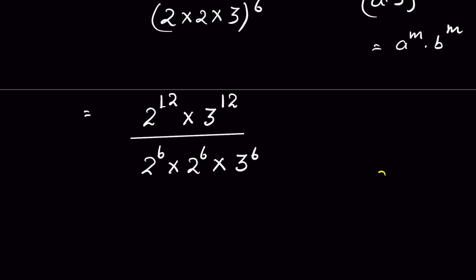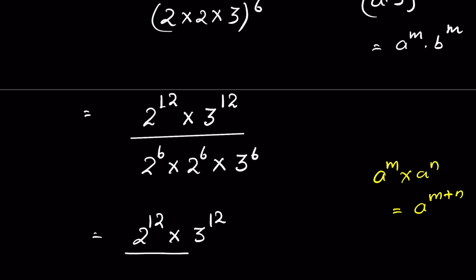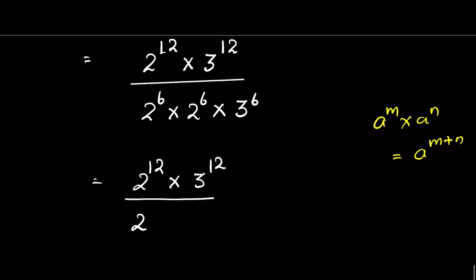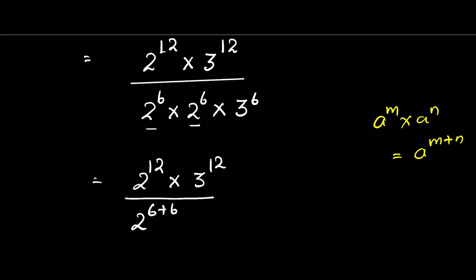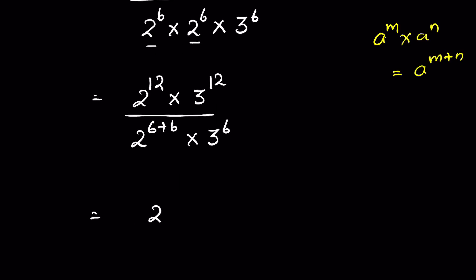Now again, when a to the power m times a to the power n, it is equal to a to the power m plus n. So it will be 2 to the power 12 times 3 to the power 12, upon 2 to the power 6 plus 6 — both the bases are same — times 3 to the power 6. So we have 2 to the power 12 times 3 to the power 12, upon 2 to the power 12.